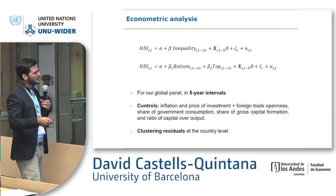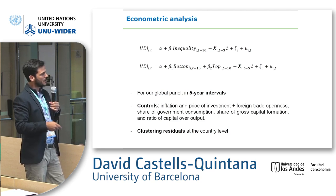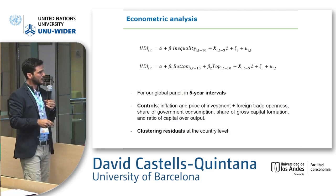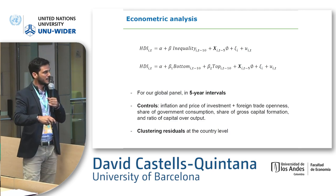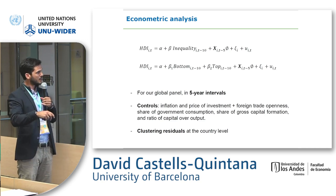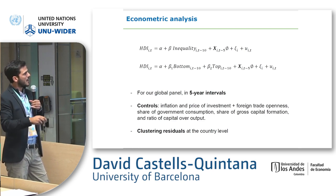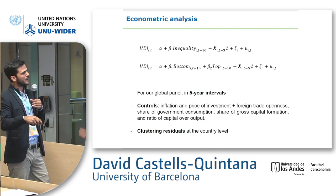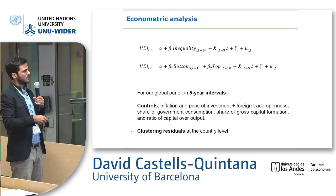The functional form is pretty simple: HDI for country i at time t, regressed on inequality measures with some lags, and some controls. This is standard in the literature — we're reproducing what other papers have done, but where previous papers look at growth, we look at HDI. We add to that the distinction between different parts of the distribution — between the bottom and the top. For the analysis, we use a global panel with five-year intervals for a more long-run association, controlling for a lot of variables.